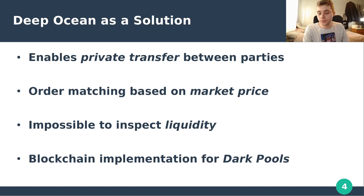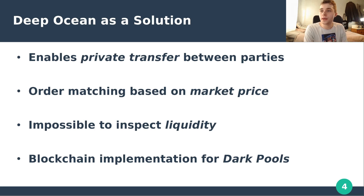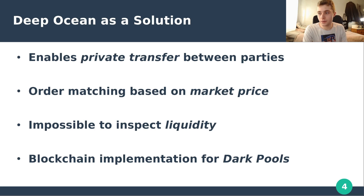But what is Deep Ocean? Why could it be a supernova for Layer 2s? Deep Ocean itself is a way of achieving dark pool functionality on the blockchain. For most of us that doesn't really bring much to mind, but for a die-hard crypto fan there might be some understanding. A dark pool is an exchange in itself — one that allows private transfer between separate parties.